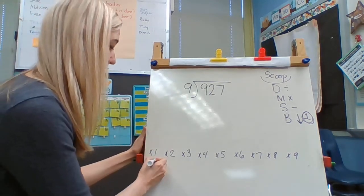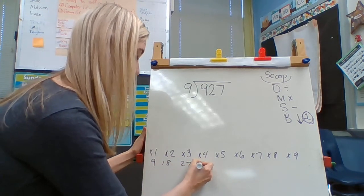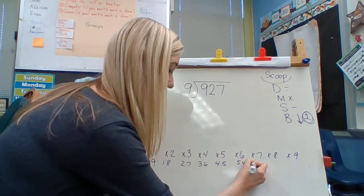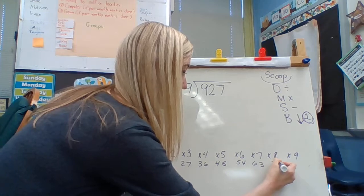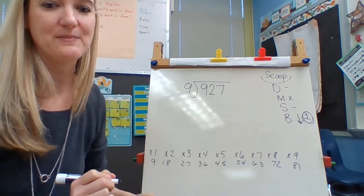So we do 9, 18, 27, 36, 45, 54, 63, 72, and 81. So I've gone ahead and skipped counted by 9.